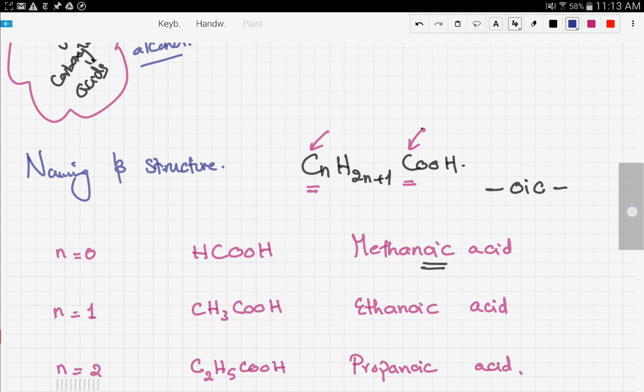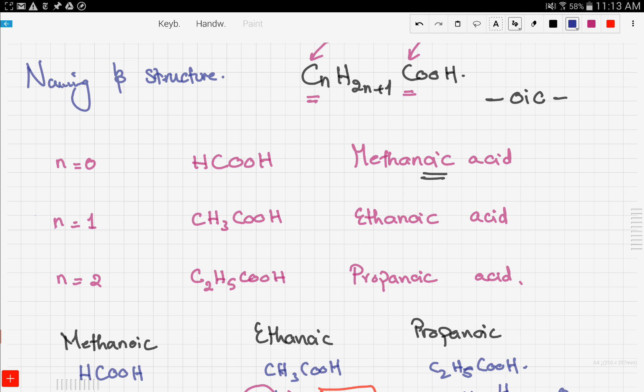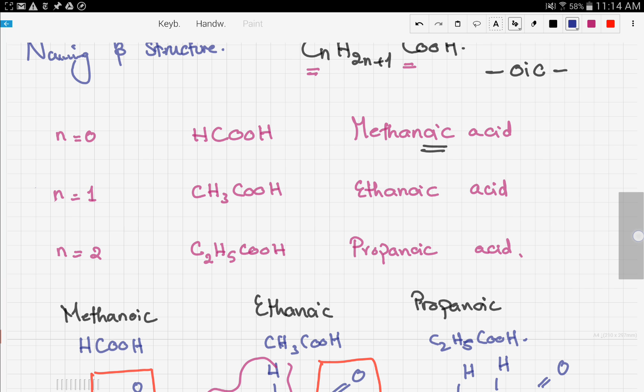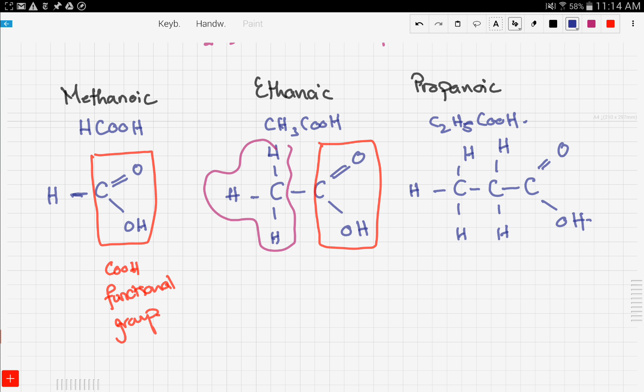In this case, it was ethanol and we get ethanoic acid. We moved on to naming and structure of carboxylic acids and we talked about three different members: methanoic acid, ethanoic acid, and propanoic acid. We also talked about how to draw the structure of these three.